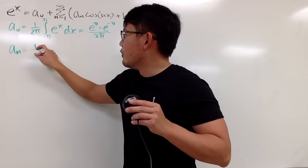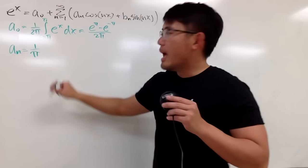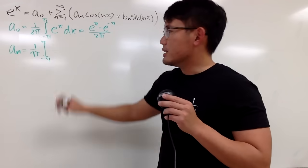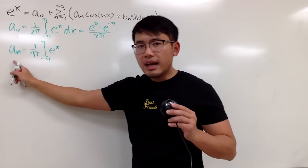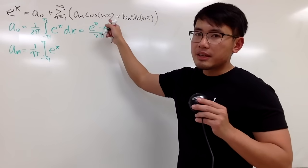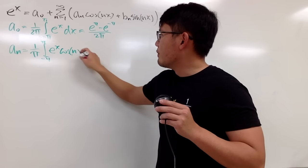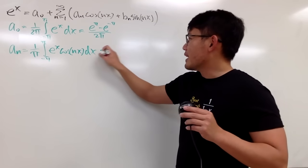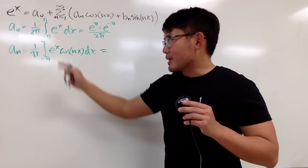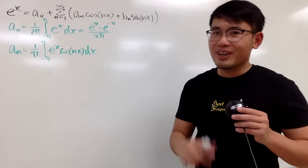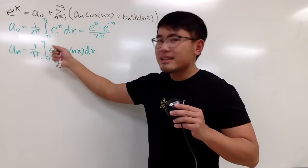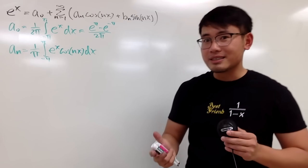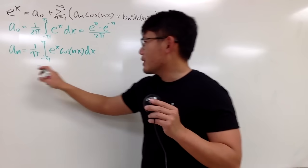Now let's figure out aₙ. aₙ equals one over π, and we integrate from negative π to π. The function is e to the x, and since aₙ pairs up with cosine(nx), you multiply by cosine of nx as well — that's how you can remember the formula. I showed how to integrate e^(ax) · cos(bx) in a previous video, so I'll just utilize those formulas here.